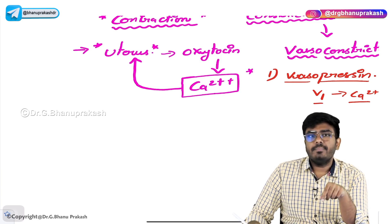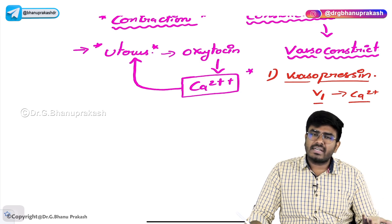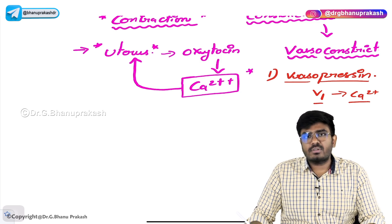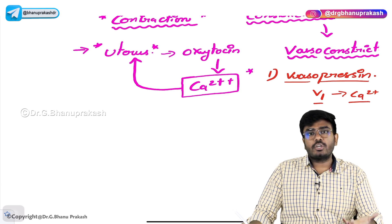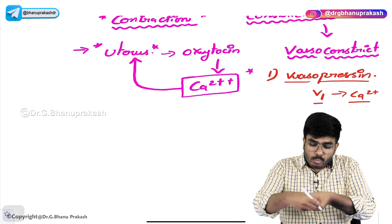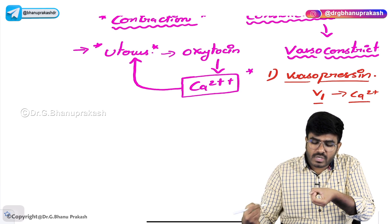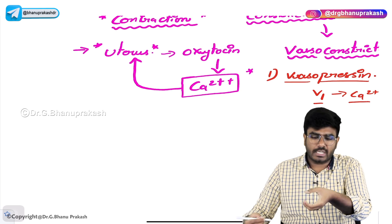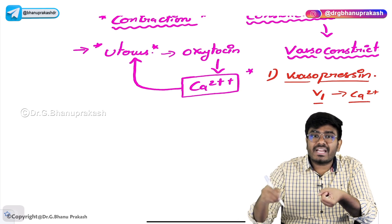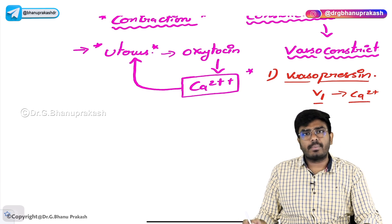Whenever V1 is stimulated, ultimately IP3 (inositol triphosphate) and DAG (diacylglycerol) are produced inside the cell. That increases calcium influx into the cell. This calcium causes contraction of smooth muscles. When the smooth muscles around the blood vessel are contracted, that causes vasoconstriction — here also it's smooth muscle contraction causing constriction of the blood vessels, so vasoconstriction is happening.